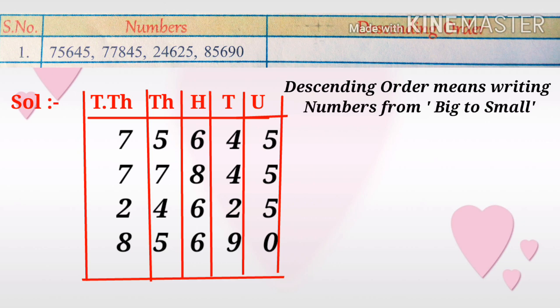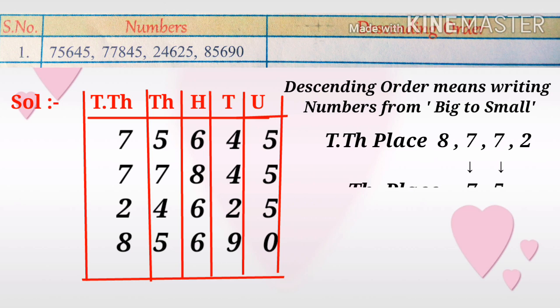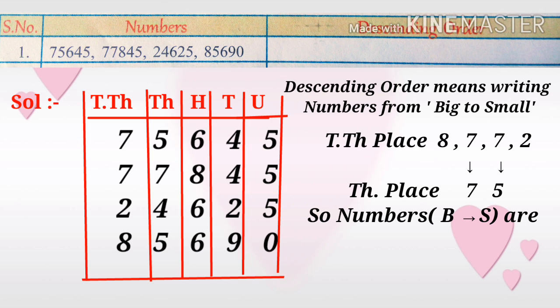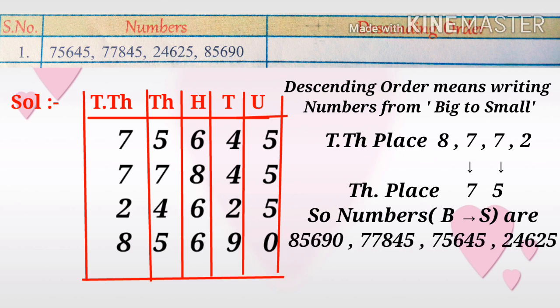For descending order, compare the greatest place value — the ten thousands place. Write the digits in descending order from big to small: 8, 7, 7, 2. We observe that two digits are equal, so compare those numbers in the thousands place.